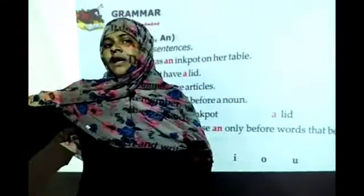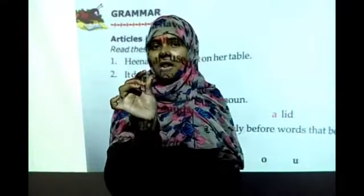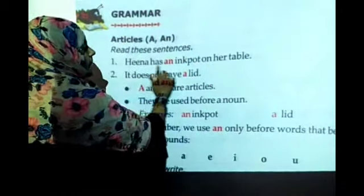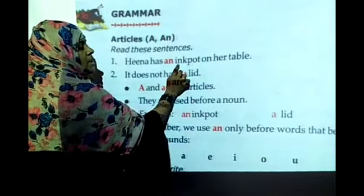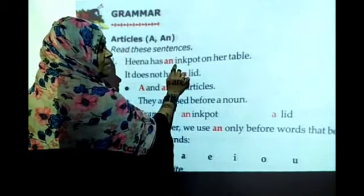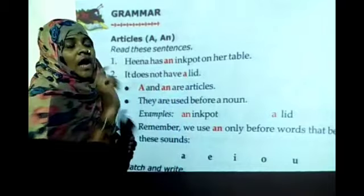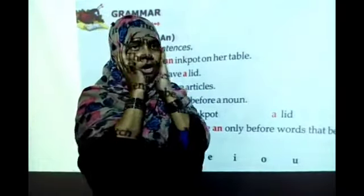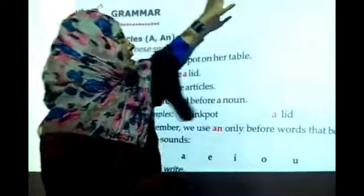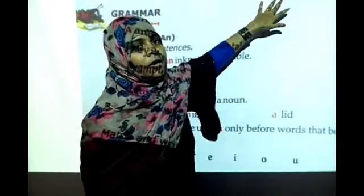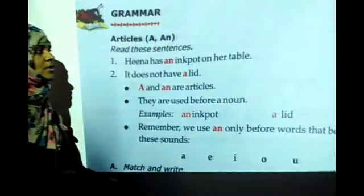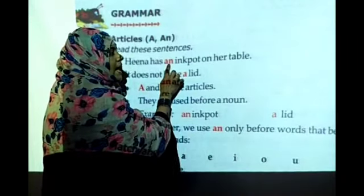If the sentence is long, we only need to see the first alphabet of the word. Look at the first letter only — do not get confused reading the whole sentence. In your answer sheet, during an exam, just write: A, E, I, O, U — we use An; remaining letters — we use A. For I, what do we use? An.